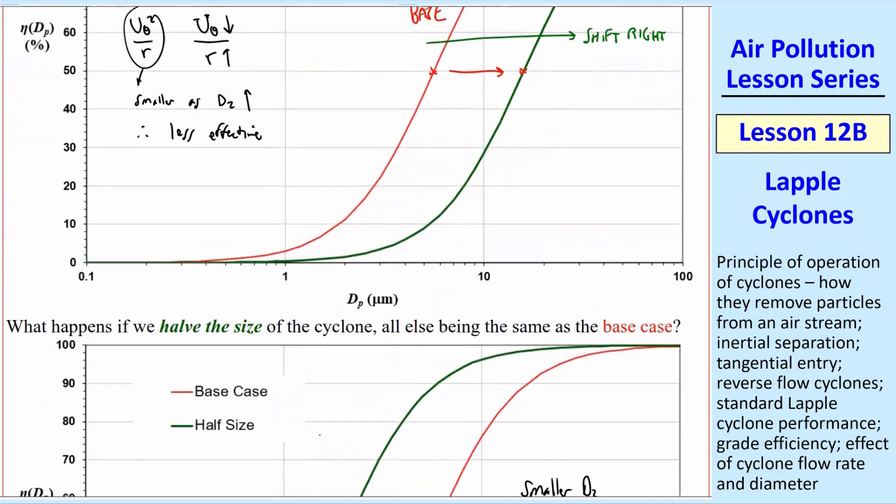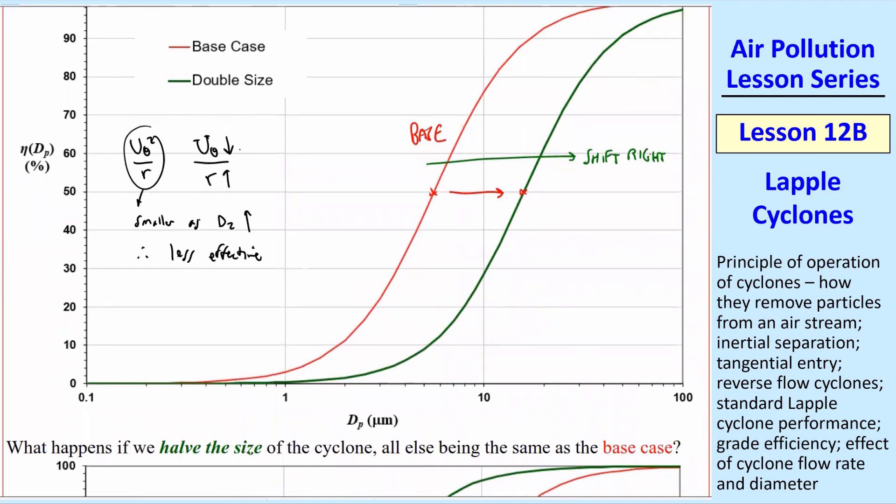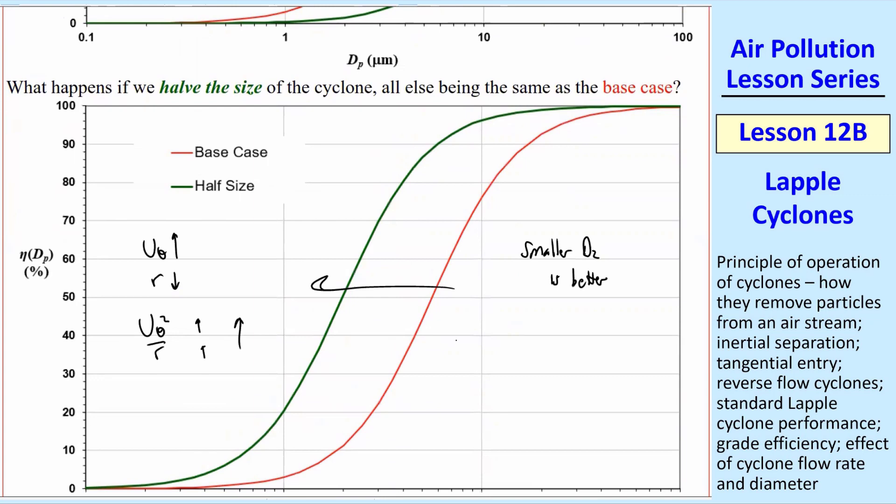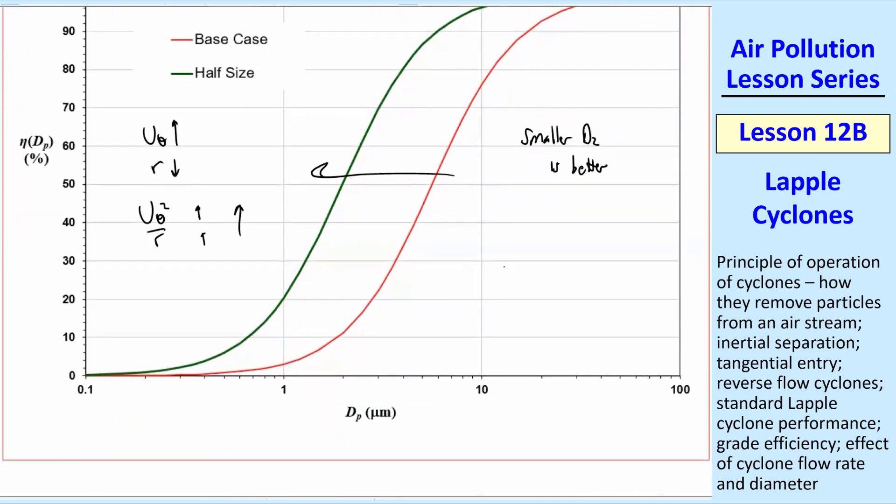So it turns out that smaller cyclones remove more particles. So if that's the case, then why not make really tiny cyclones so we get really good particle removal? And that would be true. But problem is, the smaller cyclone has a larger delta P and a larger W_dot_blower, so the power requirement gets larger. It takes a lot more pressure drop to push that same flow rate. This is all at the same Q. If you have the same flow rate but a smaller cyclone, you get better performance, yes, compared to the green to the red.